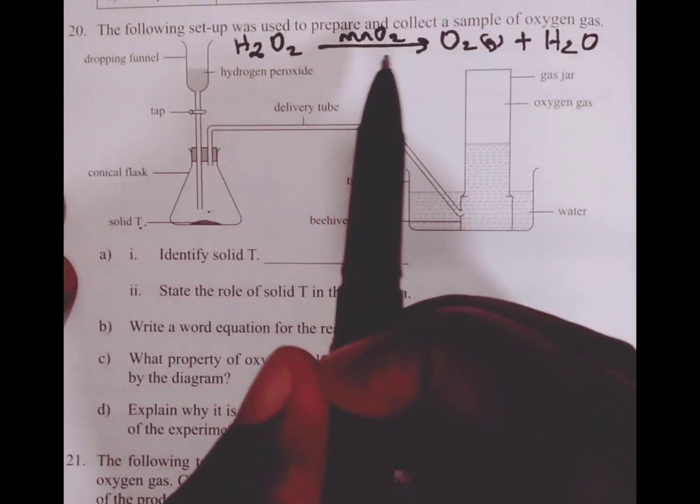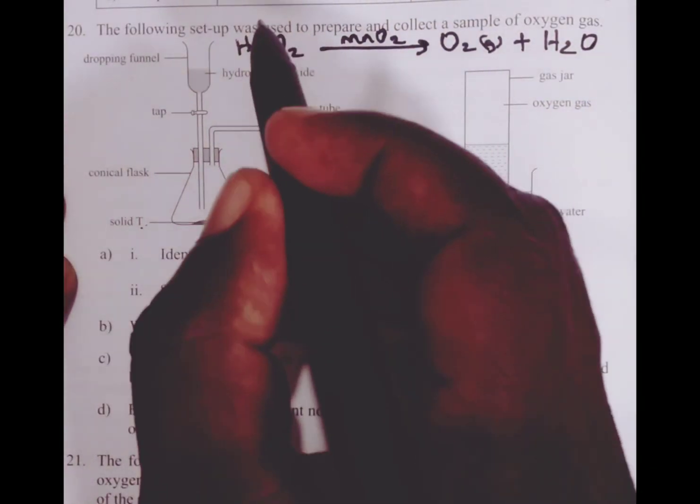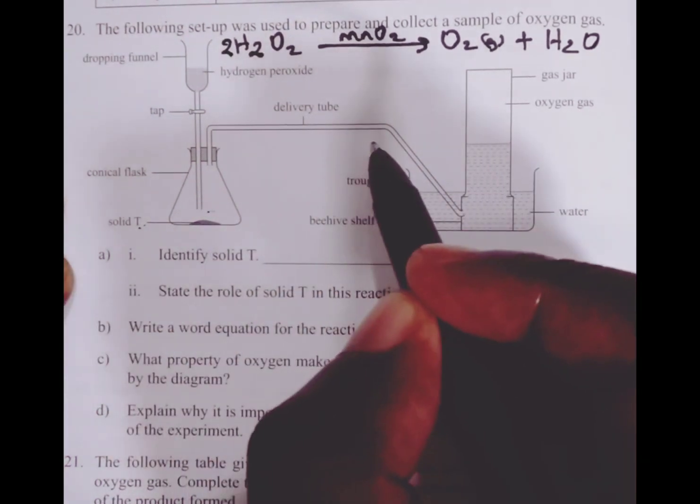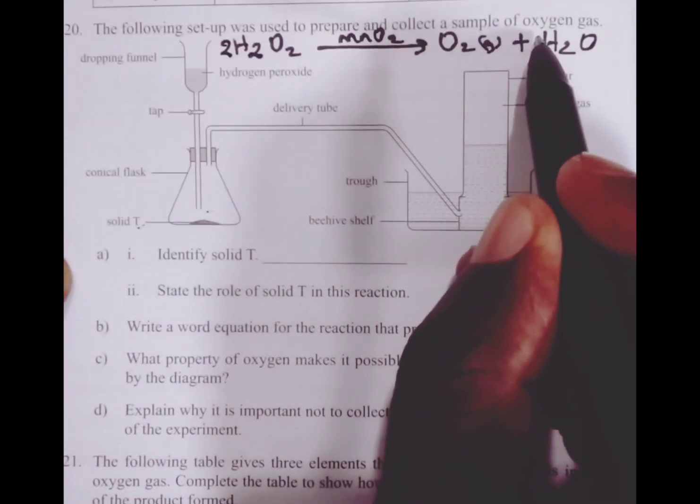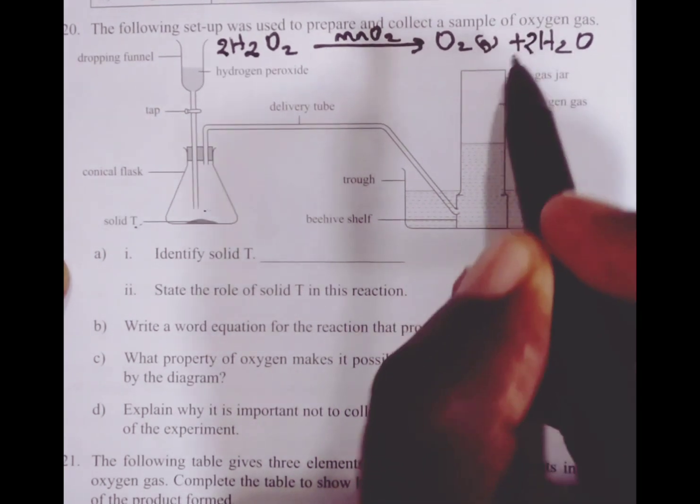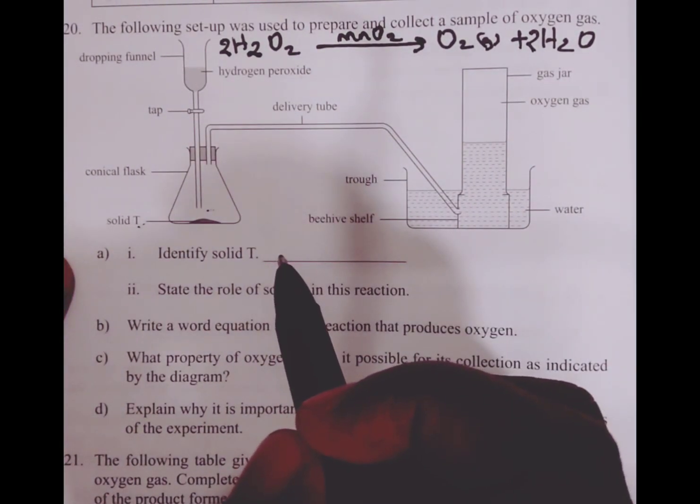So to balance the equation, we write two behind hydrogen peroxide and two behind water for the equation to be balanced.